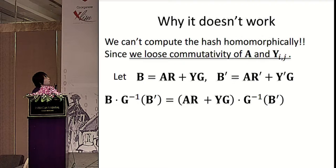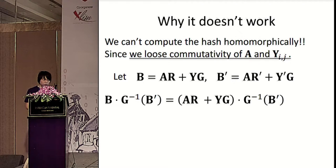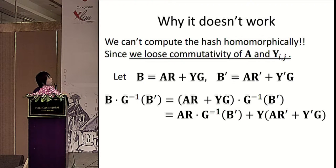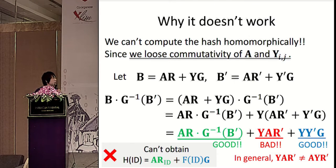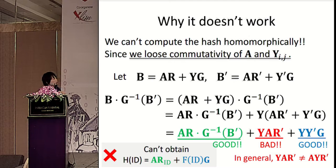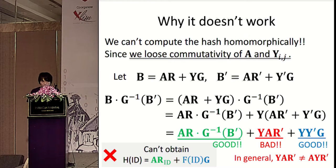This seems to work, but the problem is we lose commutativity of the homomorphic hash property. During computing hash(ID), we use homomorphic operations: B · G⁻¹(B'). Expanding, we get a term AR·G⁻¹(B'), where G and G⁻¹ cancel, giving Y·B'. But for simulation to work, hash(ID) must be in the form A·(something) + F(ID)·G — the green and blue form. The blue part gives Y'·G, which is fine, but we get Y·B' instead of A·Y, and in general Y·A ≠ A·Y — we don't have commutativity. So using a matrix Y doesn't quite work.